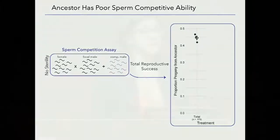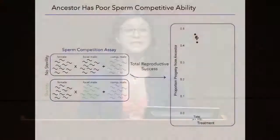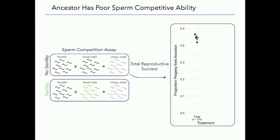Now let's look at how much of this can be thought of as coming from sperm competition — what's the sperm competitive ability of our ancestor? We do the same type of assay, except here we induce sterility of our males. The males of interest mate with females for 24 hours, sterility is induced, and competitors come in for 24 hours. Our sperm competitive success is really terrible: about 4% of progeny coming from the ancestor under this competition assay. So the sperm are not very good in our ancestors, which means we would hope to see a strong response to selection.